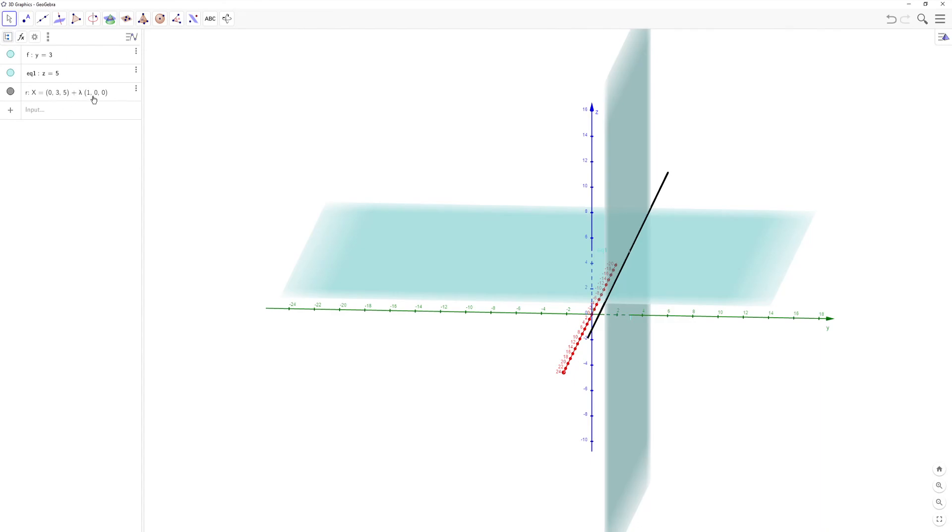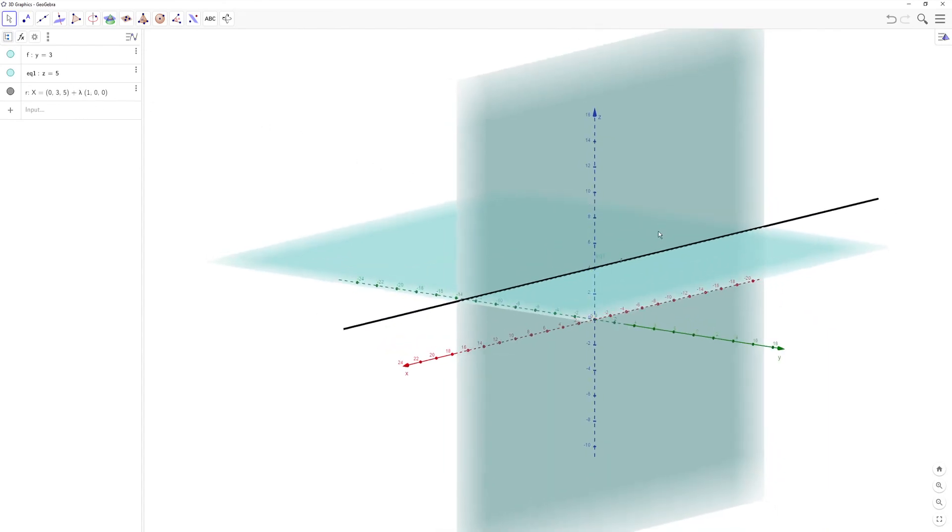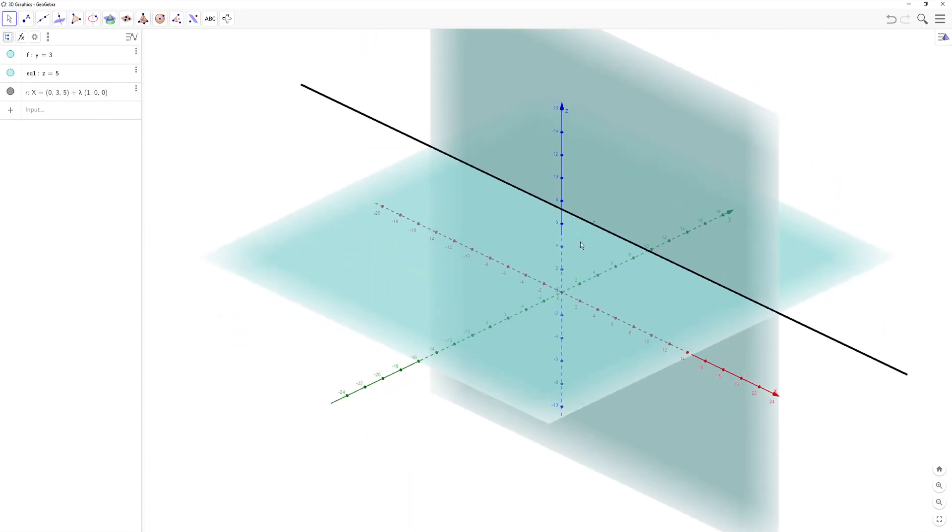So you can imagine like (1, 3, 5), (2, 3, 5), (4, 3, 5). That's what's creating this line. And then it does the same thing in the negative direction.